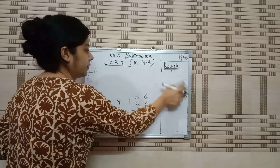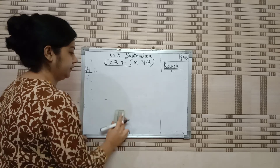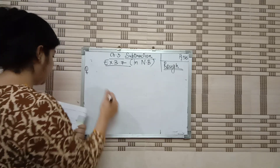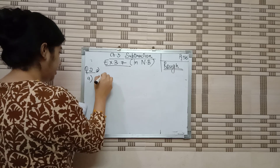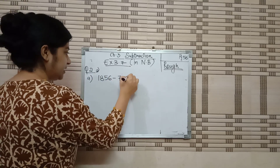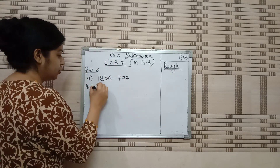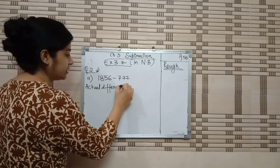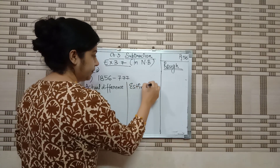Now we will do question number 2, part A. B and C are your homework — I will write the homework at the end. Question number 2A is a 4-digit number: 1856 minus 777. Make a rough column. We have to find the actual difference first — the answer of subtraction is called the difference — and then we find the estimated difference.